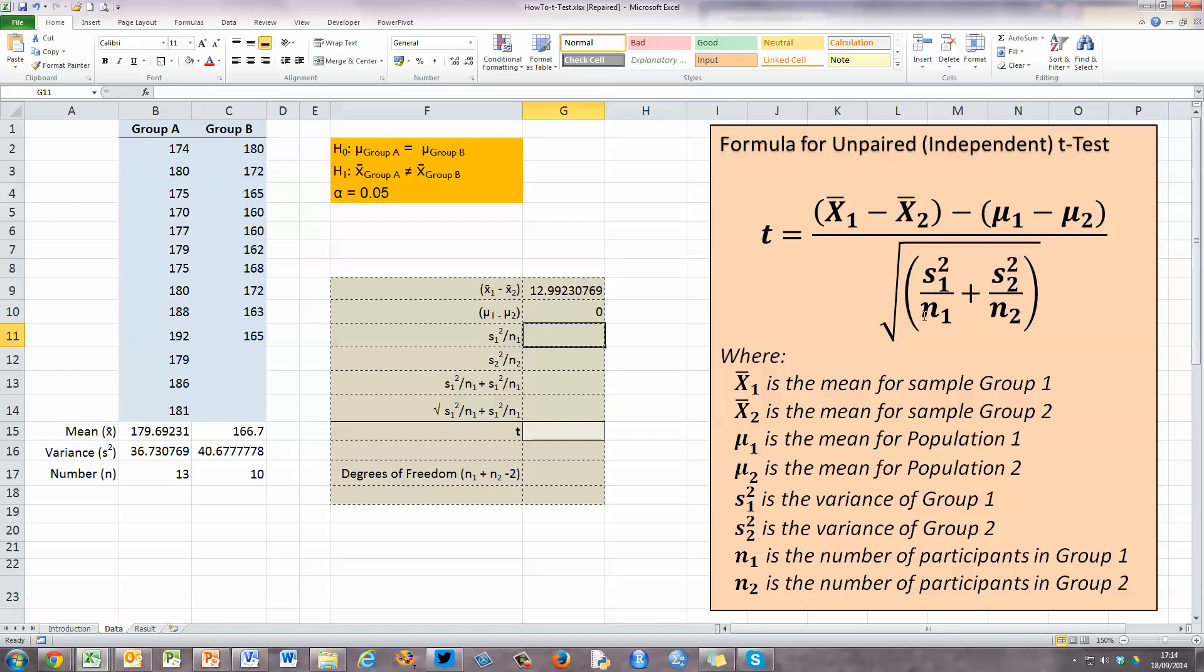Now I need to calculate step by step the bits underneath the denominator under the line. The first part here is to calculate the variance and divide it by n₁. So I'm going to do that for sample 1. So this is equal to, I've got my variance for sample 1 over here calculated already, divided by n₁, which is a value of 13 here in cell B17, and press enter. I also want to do the same for the second sample group, group B. So type in equals here, select the variance 40.67 already calculated, divided by the number in group B, and press enter.